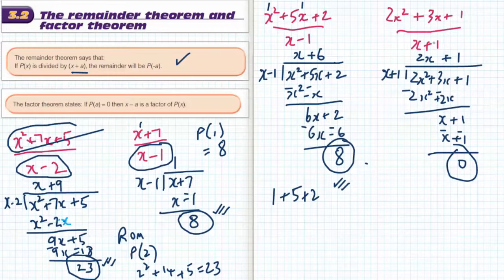And in the last example, if I put a negative 1 where x is, I'm going to have 2 times negative 1 squared will be 2 plus negative 3 plus 1, and that equals 0.